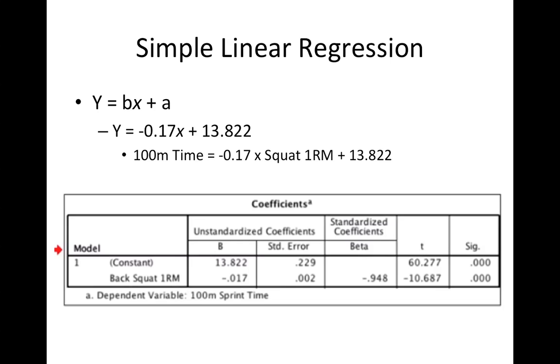And then the final aspect of this equation was a, which is a constant. And this equals the value of the dependent variable when the value of the independent variable is zero. And in order to get the values for b and a to insert into this equation, we were required to place our data into SPSS and run a regression analysis.